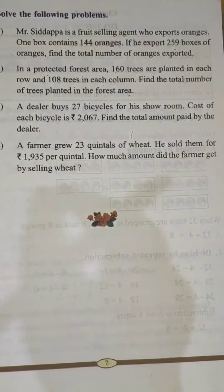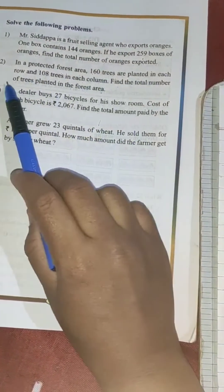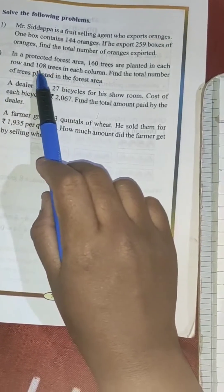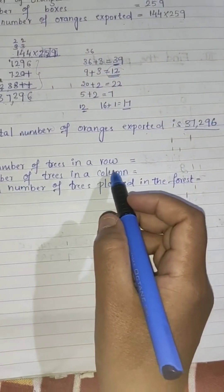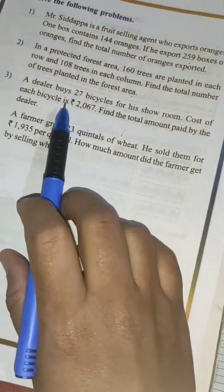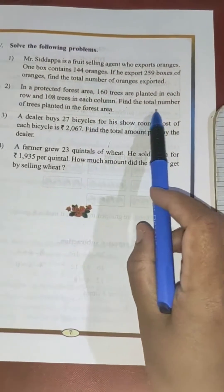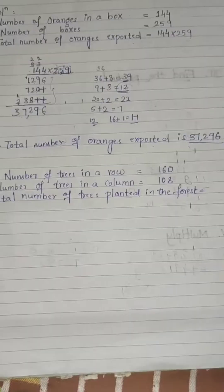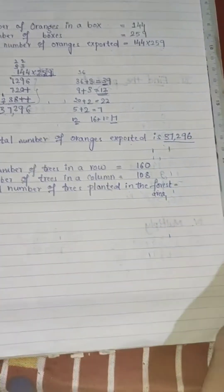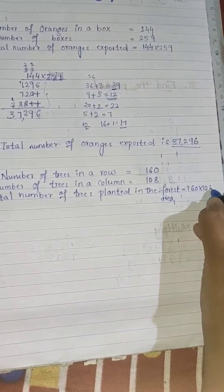Let's write the particulars. The number of trees in a row is 160, and the number of trees in a column is 108. You have to find the total number of trees planted in the forest area. So we need to calculate 160 into 108.